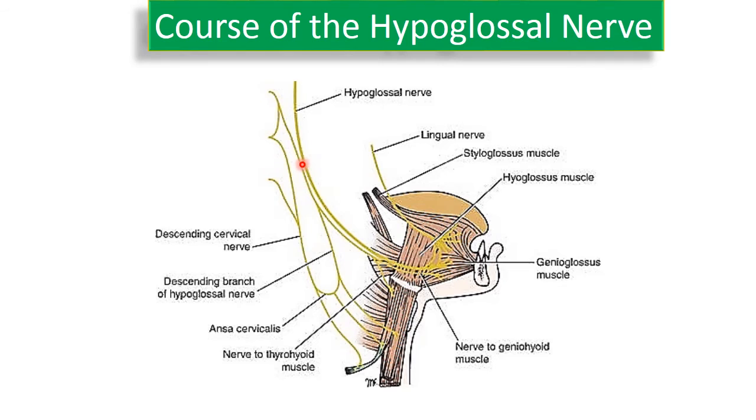The hypoglossal nerve is closely related to the C1 fibres, which form the ansa cervicalis.